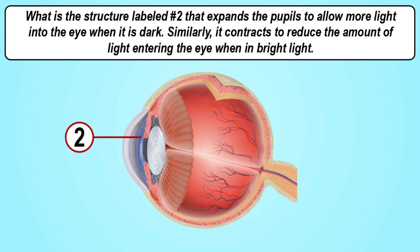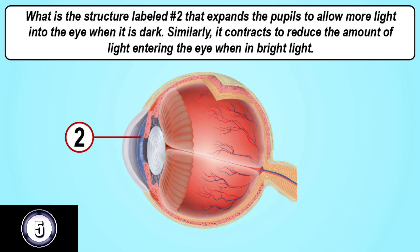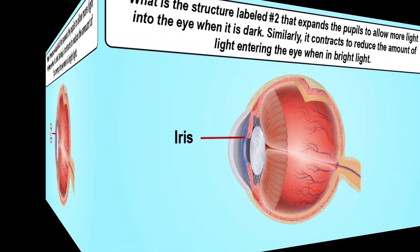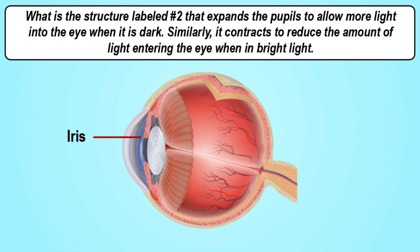What is the structure labeled number two that expands the pupils to allow more light into the eye when it is dark? Similarly, it contracts to reduce the amount of light entering the eye when in bright light. The answer is the iris.